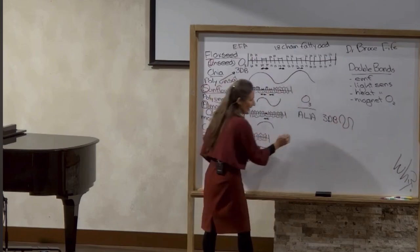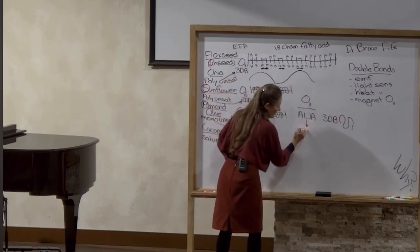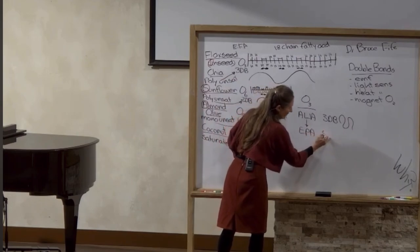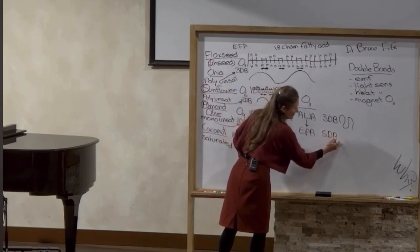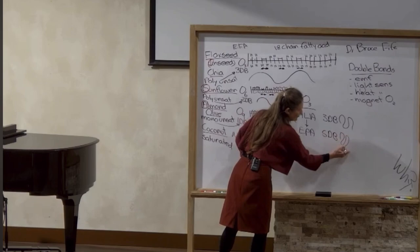In the body, ALA is converted to EPA, eicosapentaenoic acid, and it has five double bonds. So that's one, two, three, four, five.